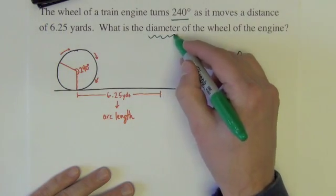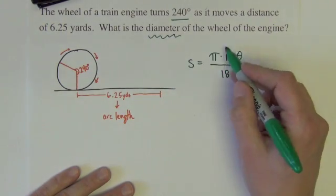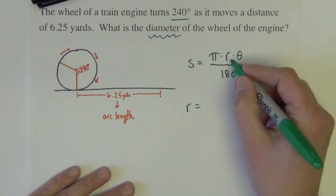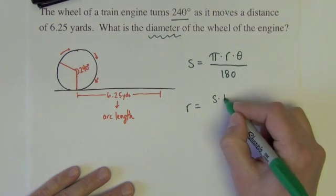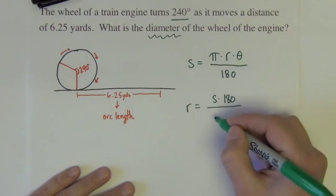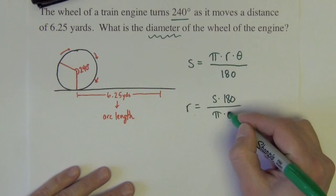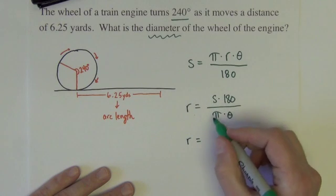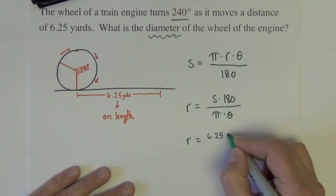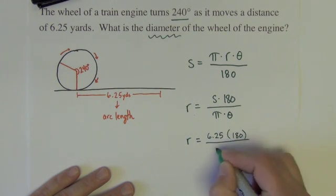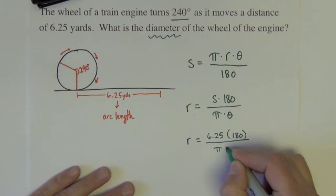We're asking to find the diameter, which I can find through the r. If I know the r, I can just double it. So solving for r, I'd multiply the 180. So S times 180 divided by pi and the theta. And we're ready to plug in and compute this out. So the S is 6.25 times 180 divided by pi times the angle, which is 240.